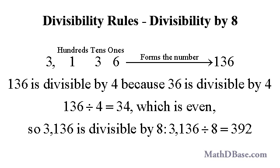If the units, tens, and hundreds digits of a whole number form a number that is divisible by 8, or ends in 000, then the number is divisible by 8. If the result of dividing a whole number by 4 is an even number, then that whole number is divisible by 2 times 4, and therefore divisible by 8.